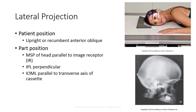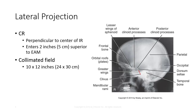For the lateral projection, the patient can be positioned upright or recumbent. If recumbent, use of a radiographic wedge sponge is recommended to help eliminate rotation or tilt. Place the MSP parallel to the table and the IR. The interpupillary line should be perpendicular to the IR, with the infraorbital meatal line parallel to the transverse axis of the IR. Direct the central ray to enter 2 inches superior to the EAM and collimate to at least a 10 by 12 inch field crosswise.